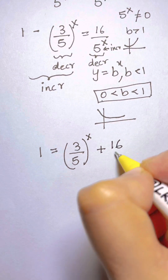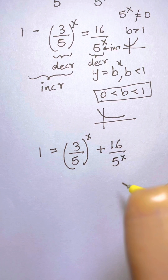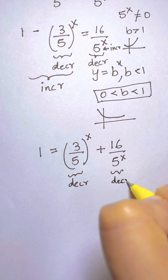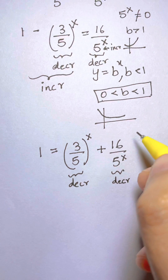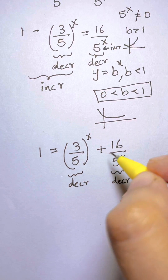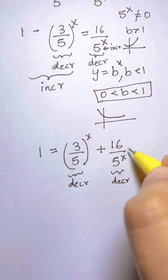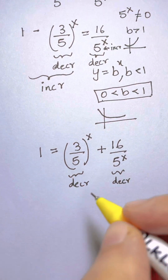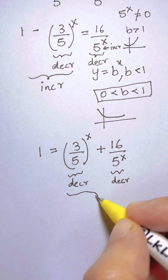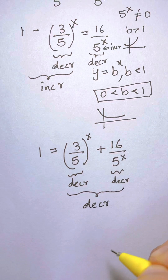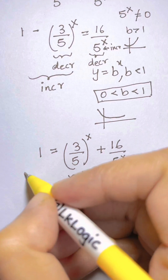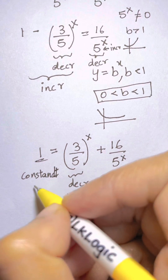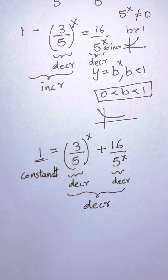Now on the right side we have two decreasing functions. When you add two decreasing functions, the result is also a decreasing function — because the derivative of each is negative, and adding two negatives gives a negative. On the left side we have the constant value 1, which is a constant function.